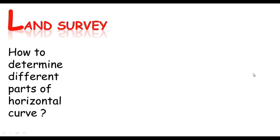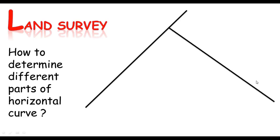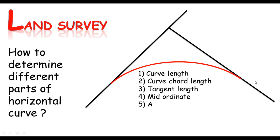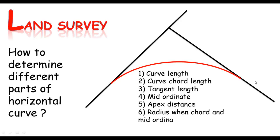Assalamu alaikum dear, myself Silke. In this short tutorial, Silke's tools present determination of the different parts of a horizontal curve. Like in this section, we learn the determination of the curve length, the chord length, the tangent length, the mid-ordinate, apex distance, and the radius when chord and mid-ordinate are known. Remember, this is for a horizontal circular curve.